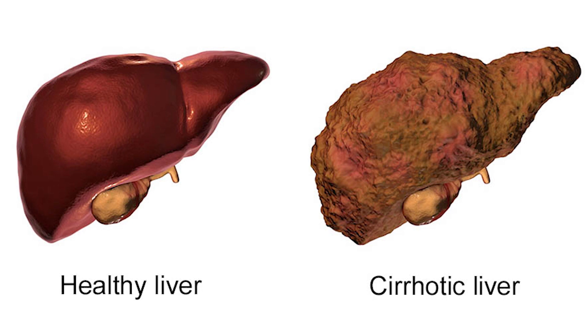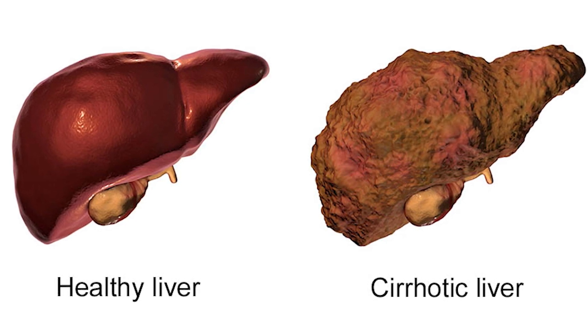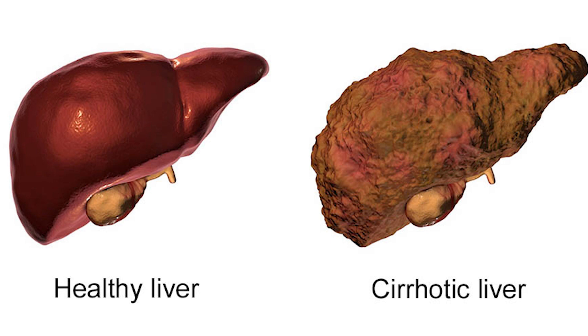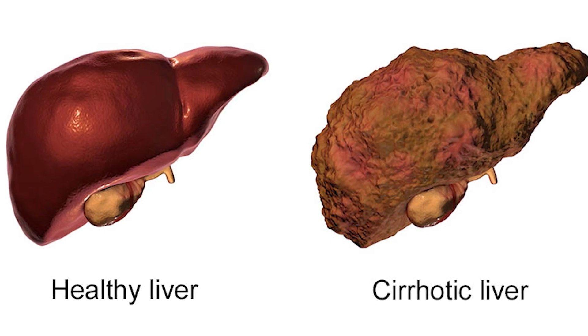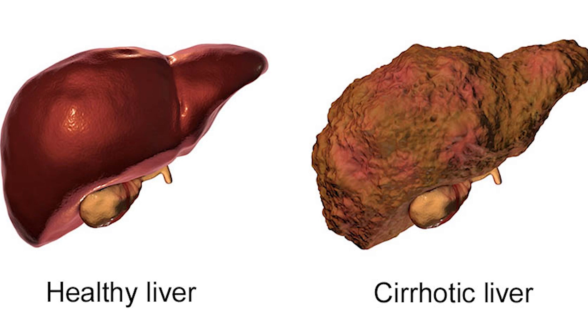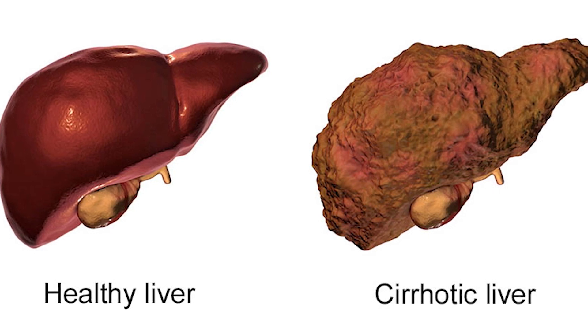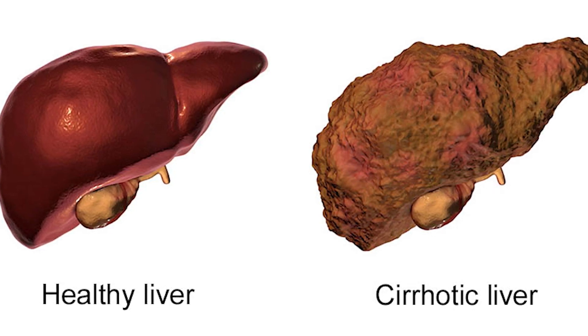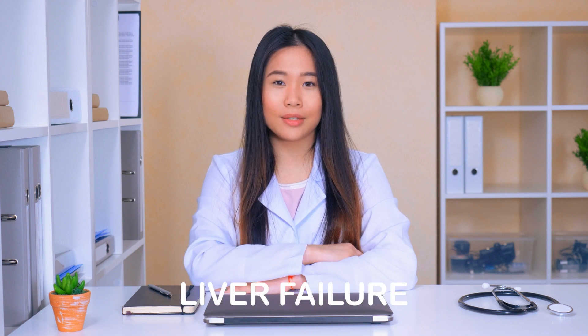Cirrhosis is the formation of fibrous tissue in the place of liver cells that have died due to a variety of causes, including viral hepatitis, alcohol overconsumption, and other forms of liver toxicity. Cirrhosis is the main cause of liver failure. Liver failure is the inability of the liver to perform its normal synthetic and metabolic functions. There are two forms: acute liver failure and chronic liver failure.